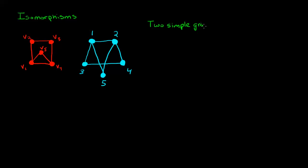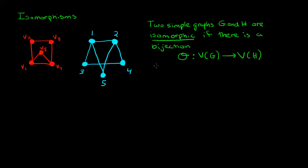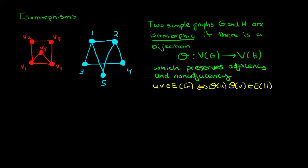Two simple graphs, G and H, are said to be isomorphic if there is a bijection, let's call it θ, which is a map that maps us from the vertex set of the first graph G to the vertex set of the second graph H, which preserves adjacency and non-adjacency. This means that u and v are adjacent in the graph G if and only if θ(u) and θ(v) are adjacent in the graph H.